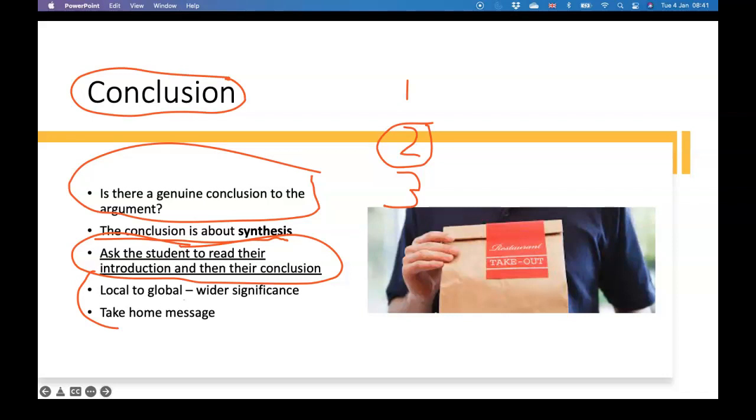Another nice thing to have in a conclusion is to go from the local to the global. What do I mean by that? To show the wider significance of this. So if a student is talking about, say, for instance, are psychopaths caused by genetics or are they caused by socialization, they could talk about, well, what are the implications of this for prison or for the justice system or something like that and show the wider significance. And the key thing is that there should be some kind of take home message at the end of the report. There should be a sense that the audience, the reader, is going to get something from this.